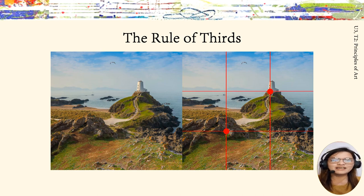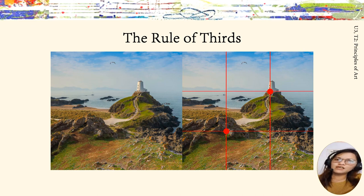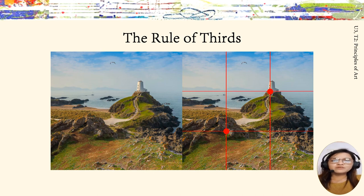We can learn two things from this example. First, the rule of thirds can improve your composition. Second, we must consider other compositional aspects in order for it to work. The rule of thirds is an excellent way to improve our art compositions, but keep in mind that we still need to consider other compositional strategies in order to create a successful composition. We should be careful not to rely too heavily on just one or two strategies when designing our artworks.